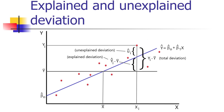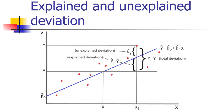Y-hat is the component of y that's explained by the regression, based on the estimated values of beta-hat 0 and beta-hat 1. If we look at the point at x sub i, the observed y at that point is y sub i, and we can break up the deviation of y from its mean, y-bar, into two components. The bottom part — the difference between the predicted value and the mean value — is the explained deviation. The distance by which the point lies above the regression line is the unexplained deviation. The total deviation is the sum of the explained deviation plus the unexplained deviation, capturing that decomposition of variation explained by the regression plus the amount not explained.